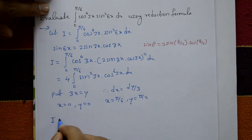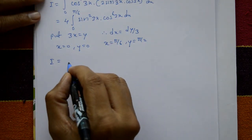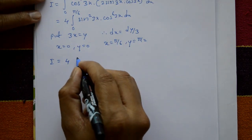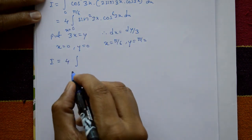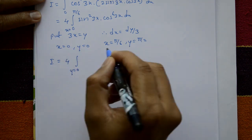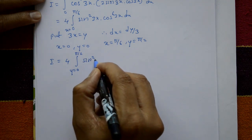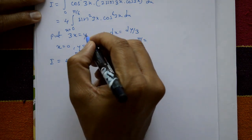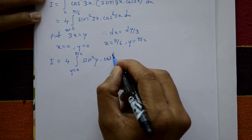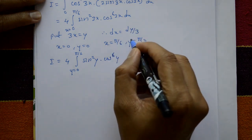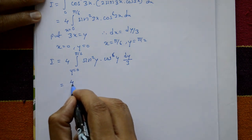Now the equation becomes: i = 4 · ∫ from y = 0 to y = π/2 of sin²(y)·cos⁶(y) · (dy/3). Taking the 3 outside, i = (4/3) · ∫₀^(π/2) sin²(y)·cos⁶(y) dy. Now apply the reduction formula.